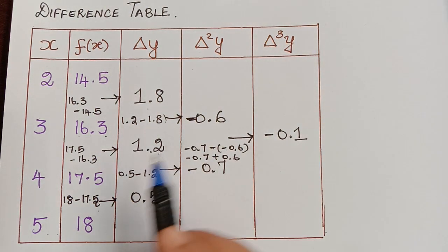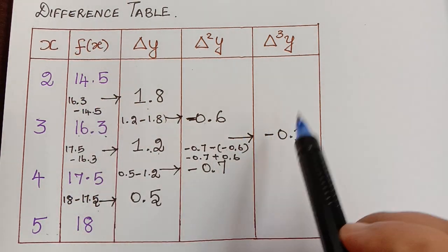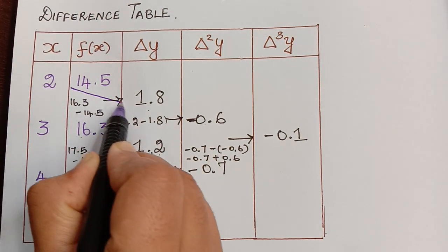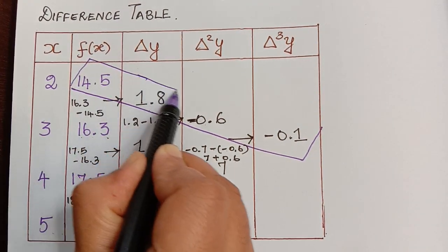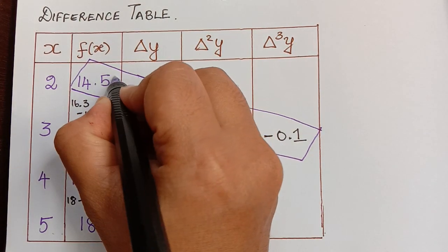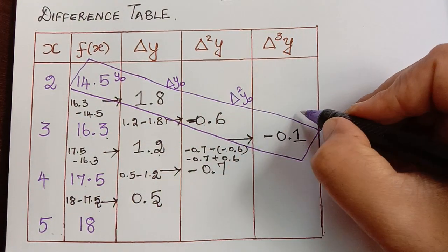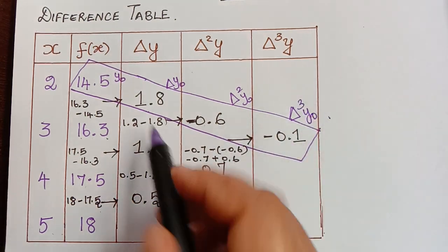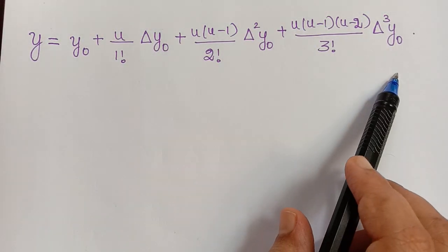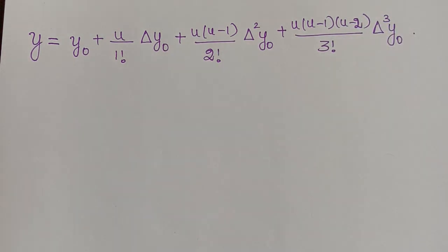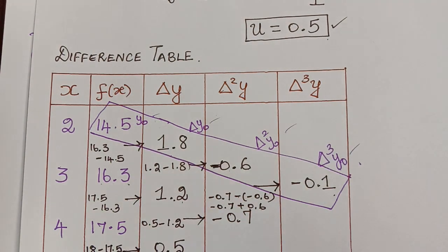After this, we mark a rectangle around the first values of all the difference columns. These are y naught equals 14.5, delta y naught equals 1.8, delta squared y naught equals minus 0.6, and delta cube y naught equals minus 0.1. These values we can now use in Newton's forward interpolation formula, which we stop at the delta cube y naught term since that is as far as our difference table goes.